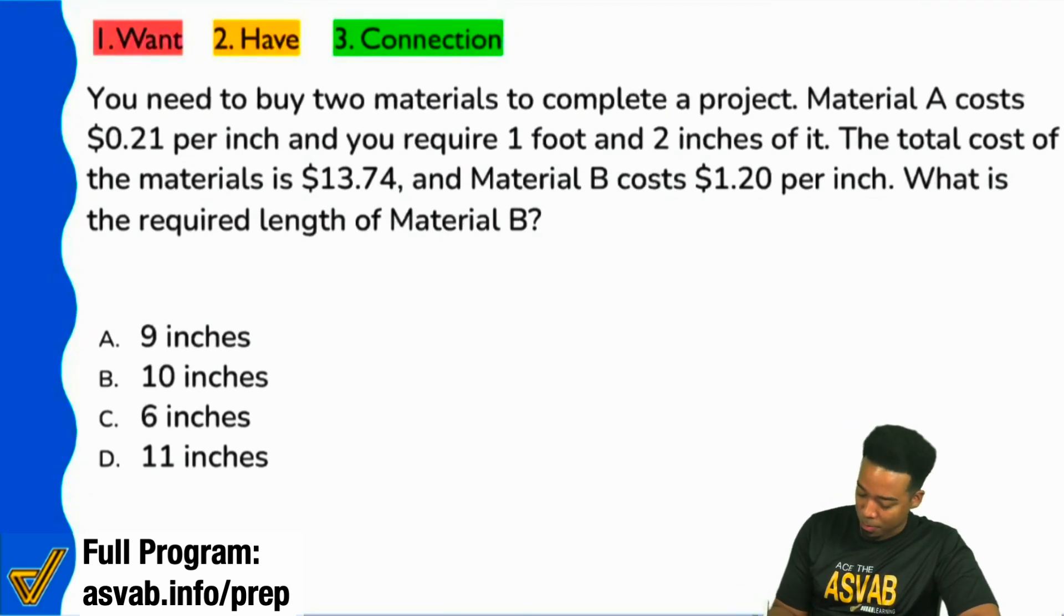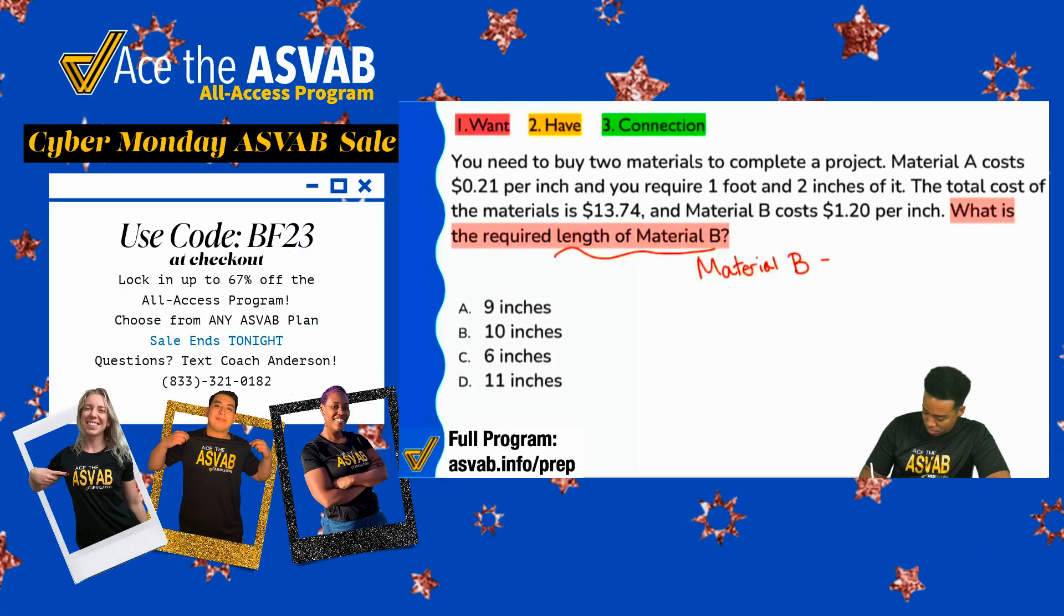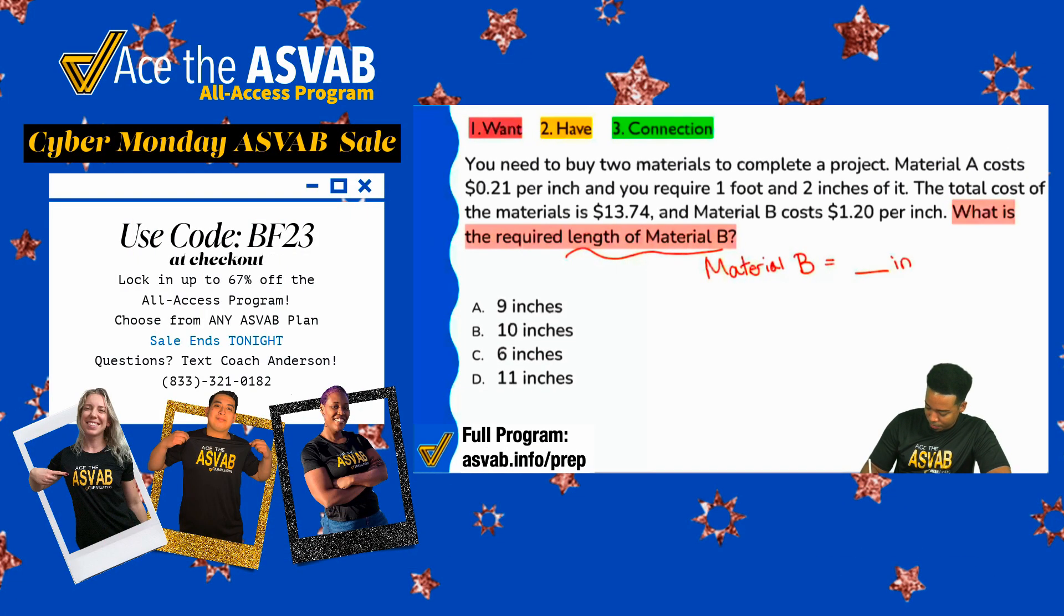Right here, my party people. What is the required length of material B? So we'll say material B equals blank inches.